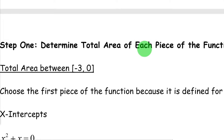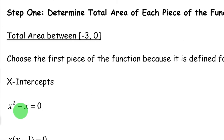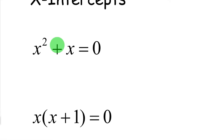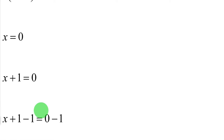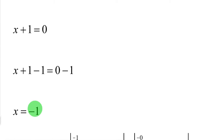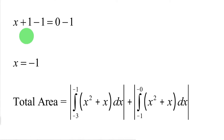Step one is to determine the total area of each piece of the function. We want to find the total area between negative 3 and 0. Our first piece is x² + x for x less than 0. When finding the total area, first figure out where it crosses the x-axis. Factor out an x: you get x = 0 and x = −1. It crosses the x-axis at those two points. For x = 0, it won't matter because that's where the piece changes anyway, but x = −1 will matter.